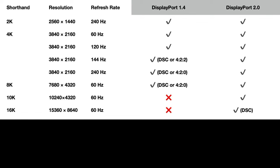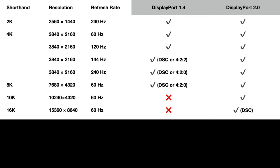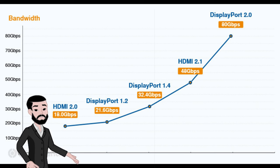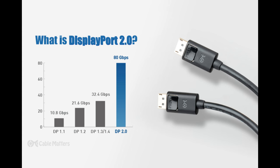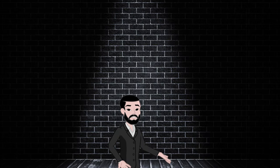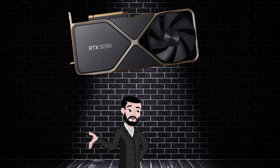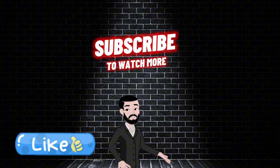While HDMI 2.1 has its benefits, the new DisplayPort 2.0 specification allows for resolutions up to an amazing 16K along with higher refresh rates, thanks to a near-tripled bandwidth over DisplayPort 1.4. DisplayPort 2.0 handles 16K with HDR at 60Hz and up to 30-bit color. As of 2024, no monitors support this yet, but a couple of AMD cards do, and leaks suggest NVIDIA's 5000 series should also include DisplayPort 2.0.